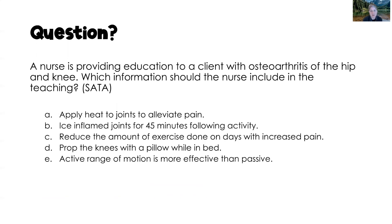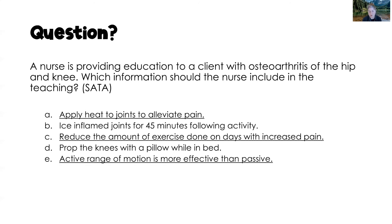Question two: a nurse is providing education to a client with osteoarthritis of the hip and knee — which information should the nurse include? Select all that apply. Correct answers are: apply heat to the joint to alleviate pain; reduce the amount of exercise on days with increased pain; and active range of motion is more effective than passive range of motion. Incorrect: ice inflamed joints for 45 minutes — we do need to limit ice to 20 minutes. Prop the knees with a pillow while in bed is also incorrect — we want to avoid repetitive flexion of the knee joints.